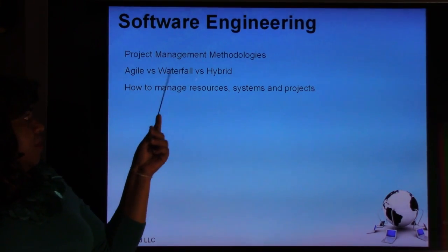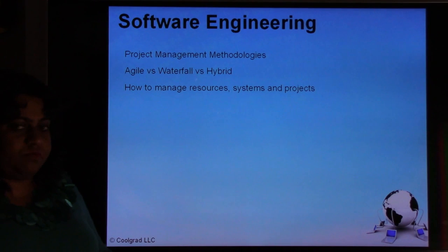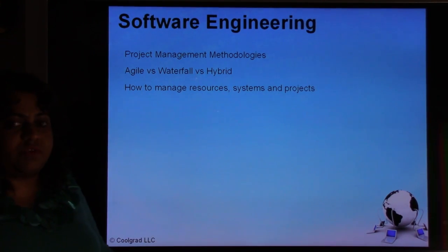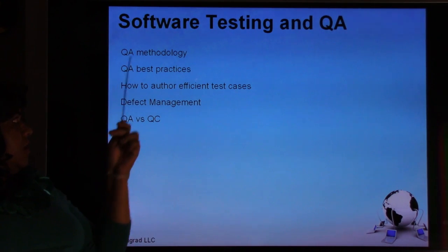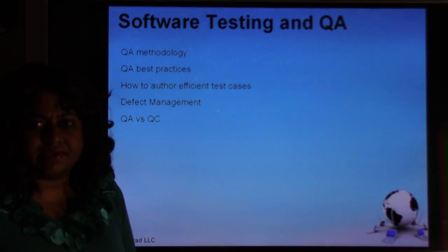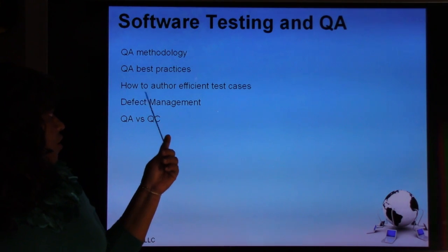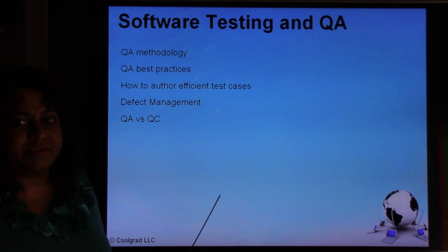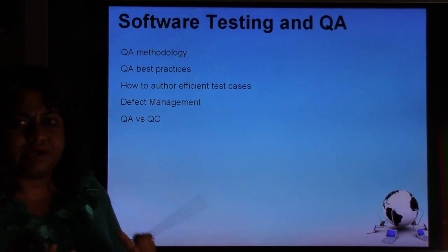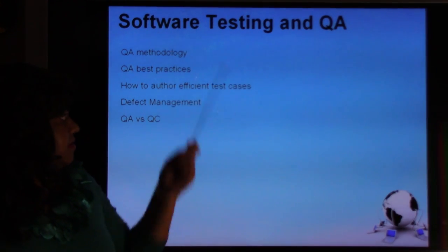Software Engineering covers project management methodologies — agile versus waterfall versus hybrid — and how to manage resources, systems, timelines, budgets, scope of work, risks, contingencies, and entire projects. Software Testing and QA covers quality assurance best practices, defect management, and agile best practices. You learn how to author official test cases, how to execute them, how to log defects, and quality assurance versus quality control for validation purposes.